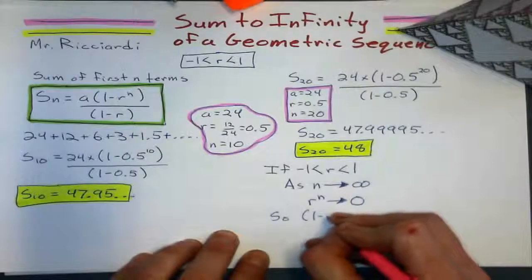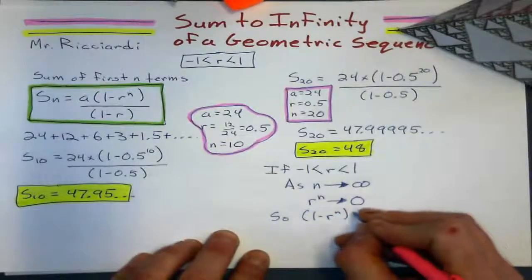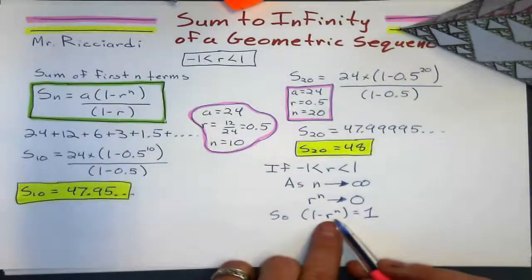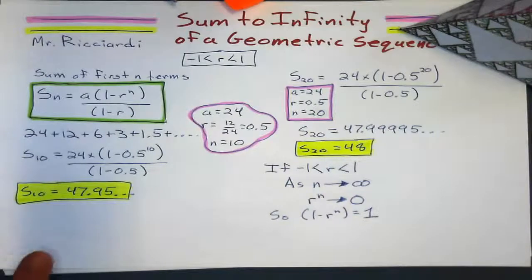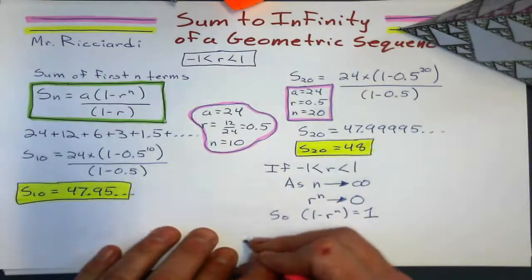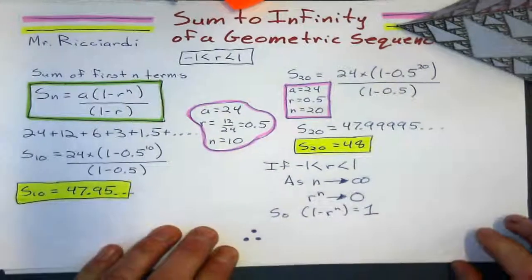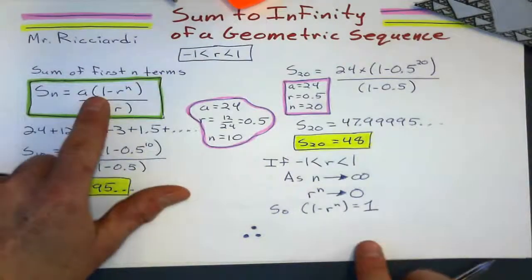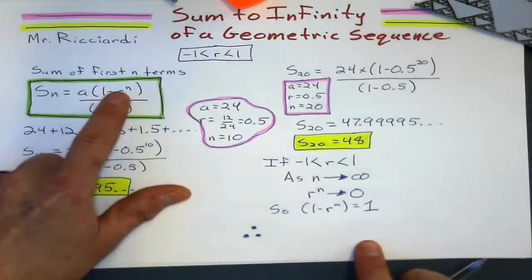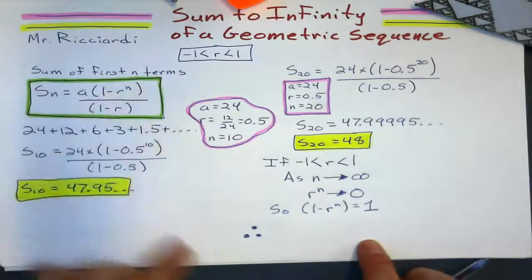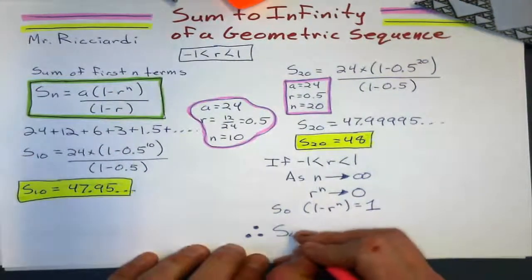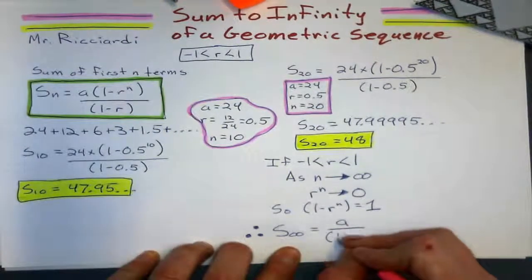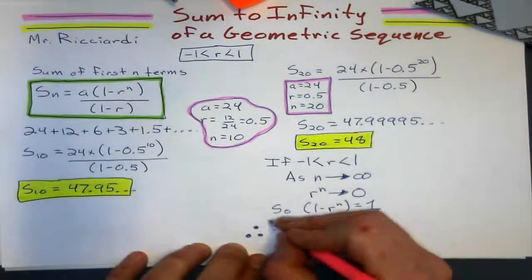I'm going to say, so, 1 minus that R to the N is basically going to equal 1, because that will give me 0, for all intents and purposes. So that thing means, therefore, if I want a formula for the sum to infinity, basically, it's going to be the same as this guy up here, equals 1, right up there. So my formula for the sum to infinity for a geometric sequence is quite simple. It's just the first term divided by 1 minus the common ratio, that's it.